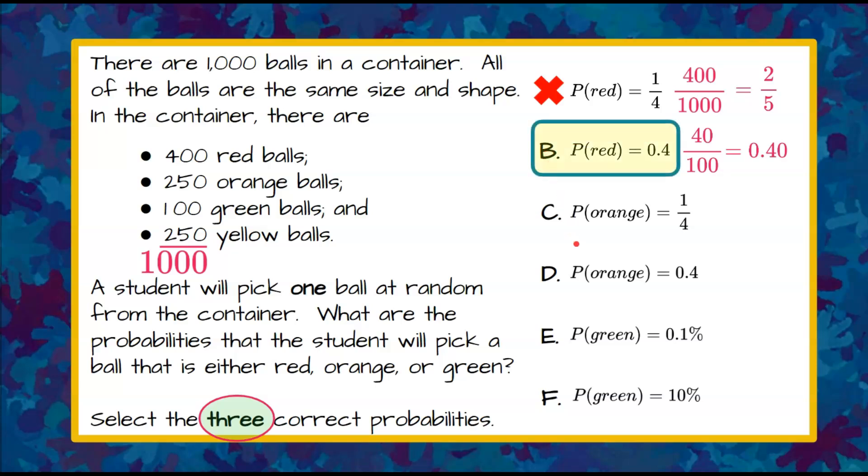Now we can see that choices C and D are about the probability of getting orange from the container. We have 250 orange balls in the container of 1,000 balls. If I simplify this I get 1/4 and that is correct.